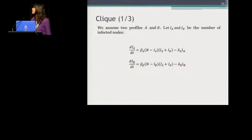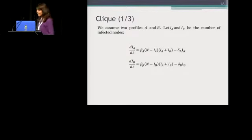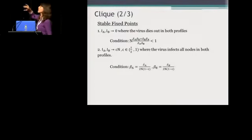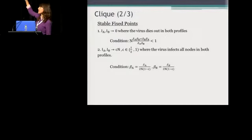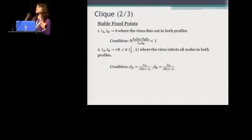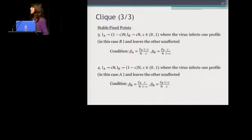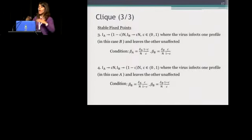For the clique, we assume two profiles, and these are the equations describing the rate of infected nodes in both profiles. The fixed points we provide for the clique are as follows: in the first scenario, this is the condition that should hold in order for the virus to die out — based only on system parameters N (the size of the network), and the healing and death rate of the virus. The second stable point is when both profiles have very low sensitivity, so the virus spreads and there's a flood. The third and fourth fixed points are symmetrical: one profile has very low sensitivity and tends to stay healthy, while the other has high sensitivity.